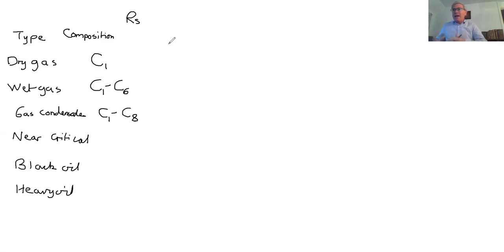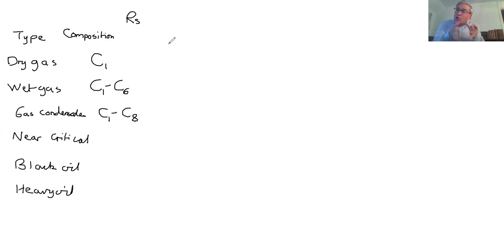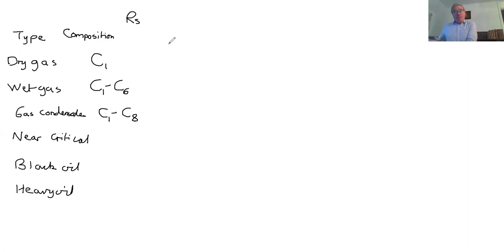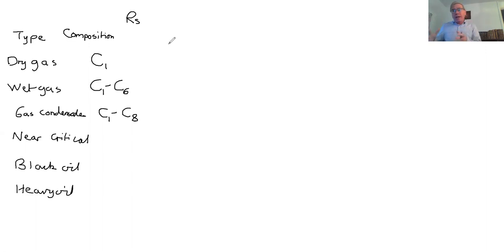If you google 'gas condensate' you'll find a Schlumberger glossary that defines it in an operational sense — based on how much gas and oil you produce at the wellhead. That's fine as a guideline, but what we've already presented is a strict thermodynamic definition. So these composition ranges are guidelines, not rigorous thermodynamic rules based on the topology of the phase diagram.